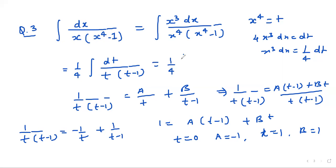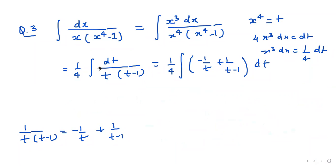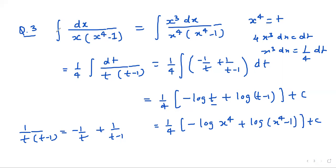So we write 1 by 4 times the integration in brackets: minus 1 upon t plus 1 upon t minus 1, all times dt. Integrating, it becomes 1 by 4 times the quantity minus log t plus log t minus 1 plus c. Substituting t equals x power 4, the answer is 1 by 4 times log x power 4 minus 1 minus log x power 4 plus c. Thank you for watching.